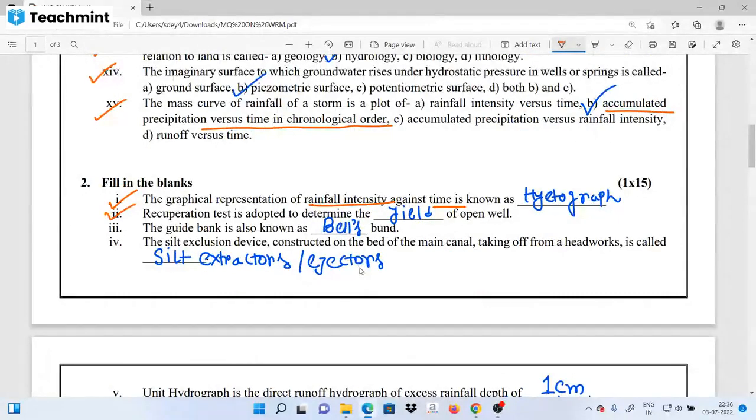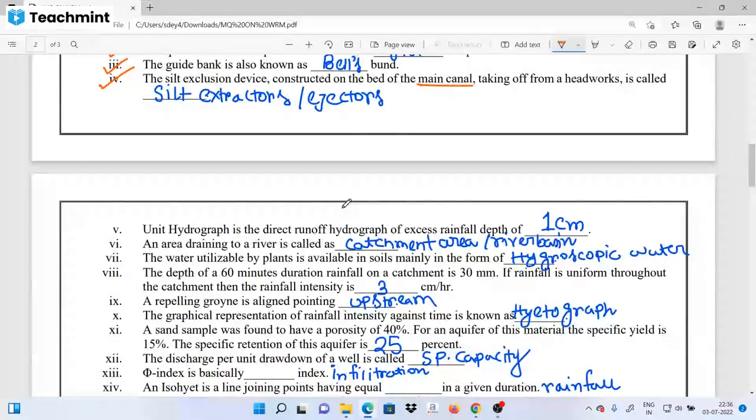For sediment exclusion, the silt exclusion device is constructed on the bed of the main canal, so we call it a silt extractor or ejector. Unit hydrograph is the direct runoff hydrograph of excess rainfall depth of 1 cm. The area draining to the river is called the catchment area or river basin. The water utilized by plants is available in soil mainly in the form of capillary water. Here's a rainfall intensity calculation: total rainfall depth is 30 mm, time is 60 minutes. So it is 30 mm per hour.